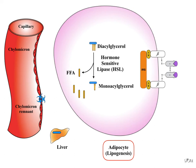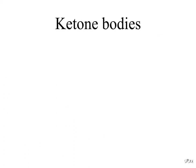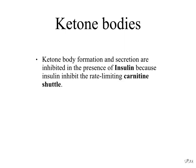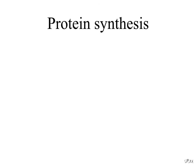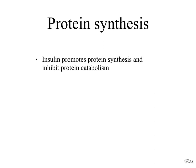Insulin decreases hormone-sensitive lipase activity in adipocytes. Ketone body formation and secretion are inhibited in the presence of insulin, because insulin inhibits the rate-limiting carnitine shuttle. Insulin also promotes protein synthesis and inhibits protein catabolism.